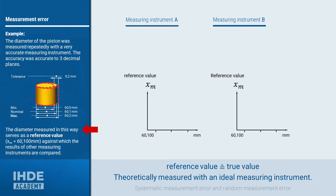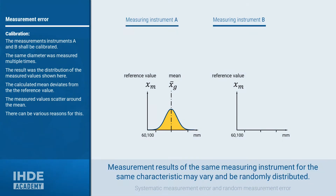In our example, the diameter was measured to a thousandth of a millimeter, giving a result of 60.100 mm. This will be our reference value, xm, with which we will compare the measurement results from measuring instruments A and B. With measuring instrument A, the same diameter was measured multiple times, resulting in the distribution of measured values shown here. The distribution has two important characteristics: first, the mean xg bar, which deviates from the reference value xm; and secondly, the spread of the measured values around this mean value.